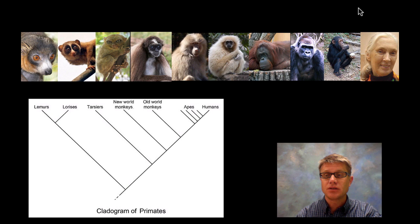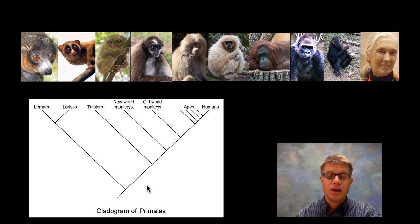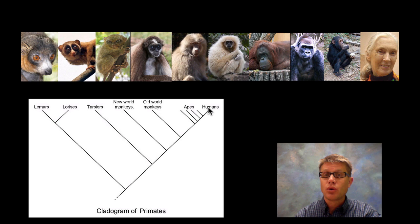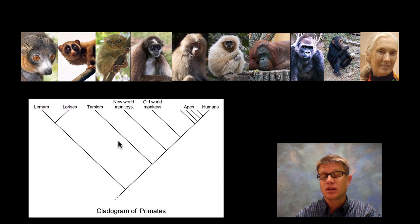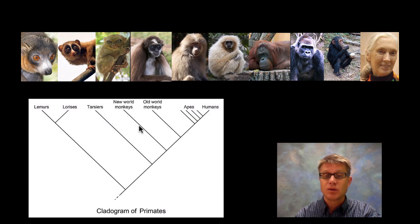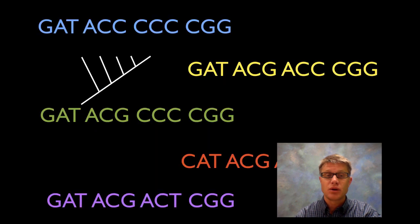Here's an example of one that you belong to. You are a human, so you're way over here on this side. We can look at how you're related to a gorilla, an orangutan, or even a loris. Now there's an idea that humans are always at the top because we're the most highly evolved — that's silly. If a loris was giving this podcast, the loris would put himself right up here. It's just saying this is an organism and how related is it to other primates.